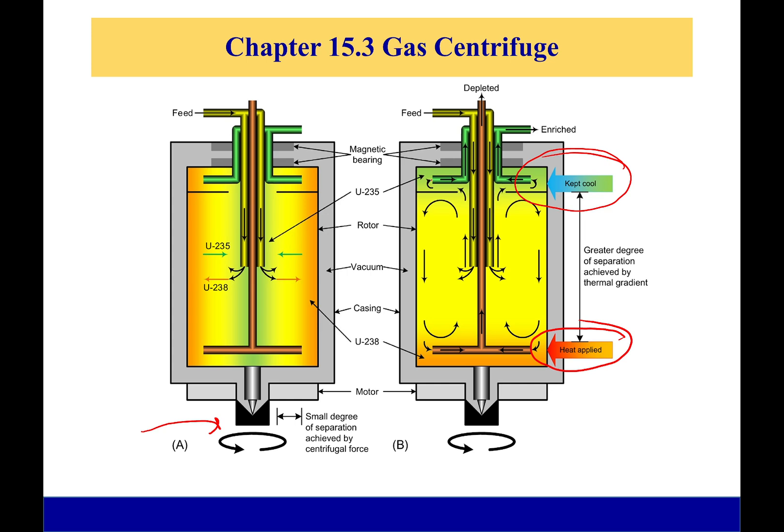So we have U-235 which is lighter going to the top and U-238 which is heavier going to the bottom, because lighter things rise, heavier things fall to the bottom.